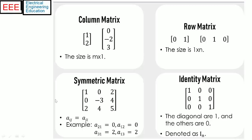Matrices are denoted by capital letters. A vector is a type of matrix having an array of values either real or complex, and usually represented by a lower case bold letter. A matrix having a single column is called a column vector. Similarly, a matrix having a single row is called a row vector.